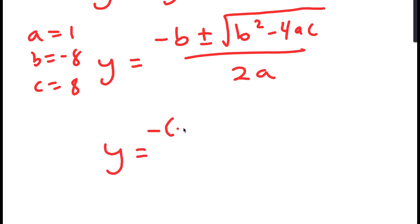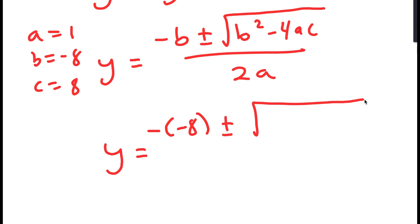So I get y equals negative of negative 8 plus or minus the square root of negative 8 squared minus 4 times 1 times 8, all over 2 times 1. This is equal to positive 8 plus or minus the square root of 64 minus 32 over 2, which is equal to 8 plus or minus the square root of 32 over 2.